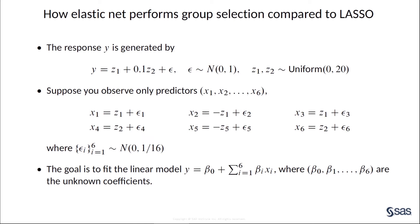Let's look at the second example. Here we first have two independent hidden factors, Z1 and Z2. We generate the response Y from Z1 and Z2. The observed predictors X1, X2, and X3 are generated from Z1, while X4, X5, and X6 are generated from Z2. By construction, we can clearly see that the variables X1, X2, X3 and X4, X5, X6 form two groups, whose identifying factors are Z1 and Z2, respectively.